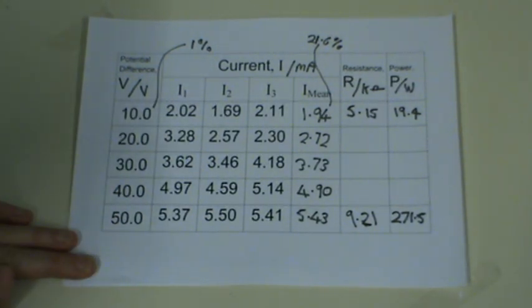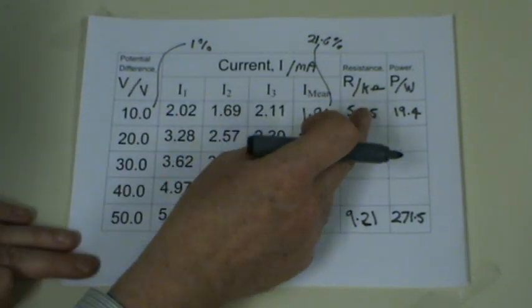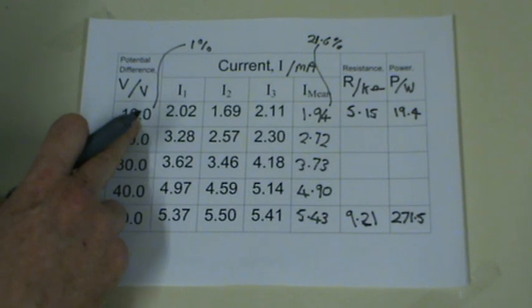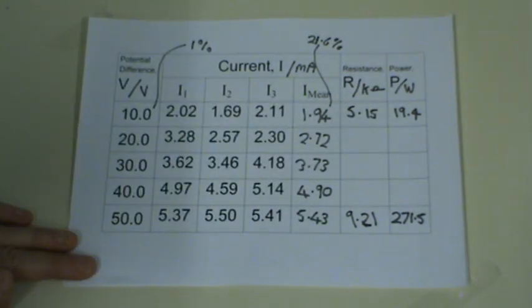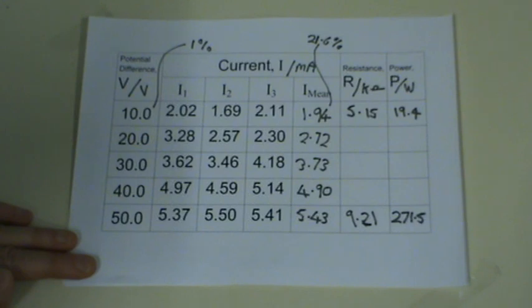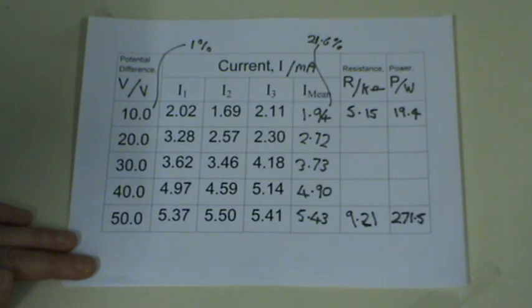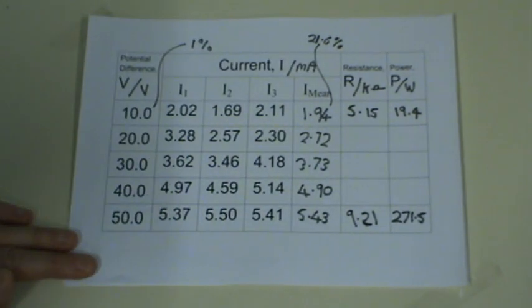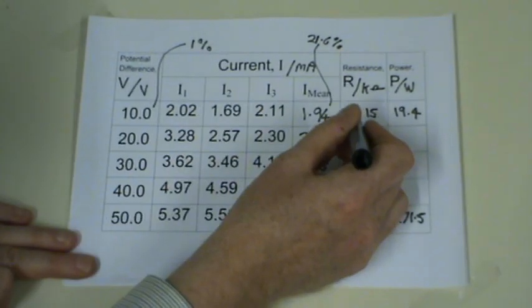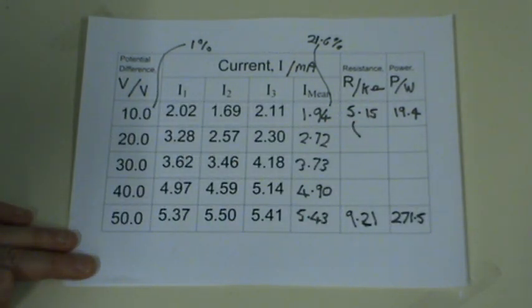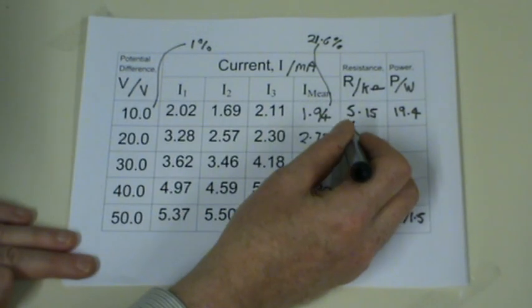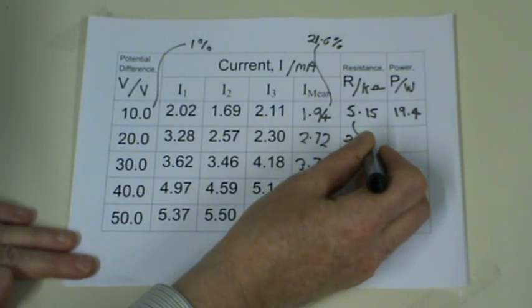We're not going to report these directly because the question asks about the percentage uncertainty in the resistance. We calculated resistance by dividing potential difference by current. When dividing two values to get a result, you add their individual percentage uncertainties. This gives a percentage uncertainty in the resistance of 22.6%.